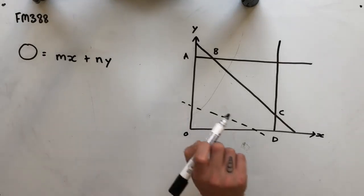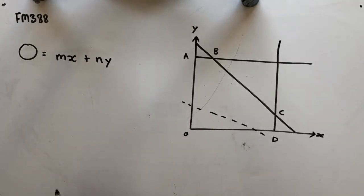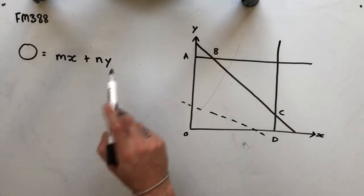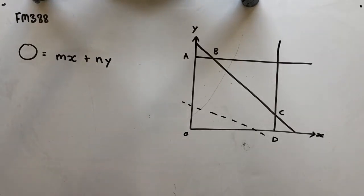It says that the equation of the objective function for this problem is of the form O equals MX plus NY, where M is greater than 0 and N is greater than 0.